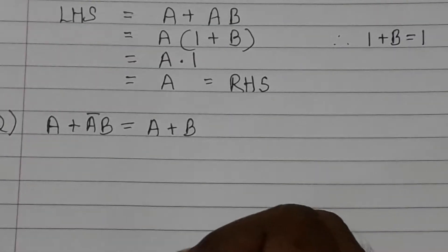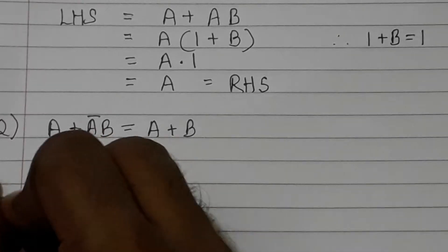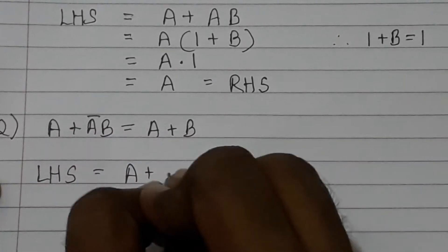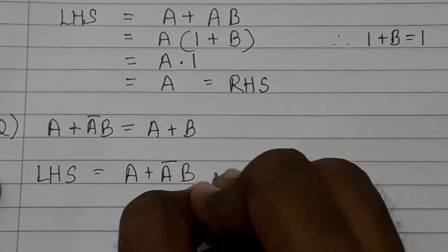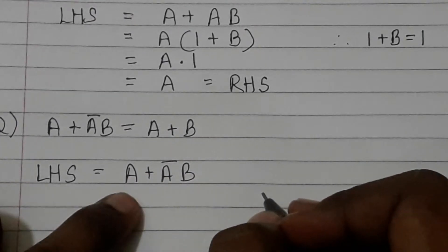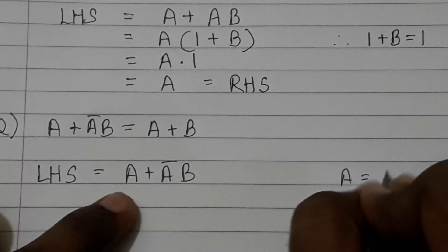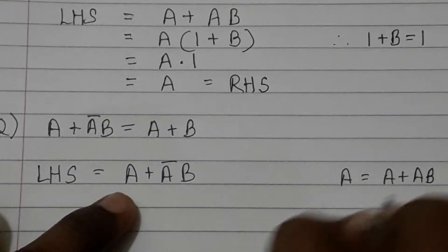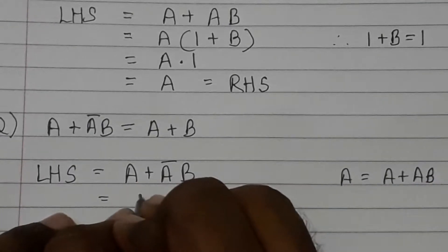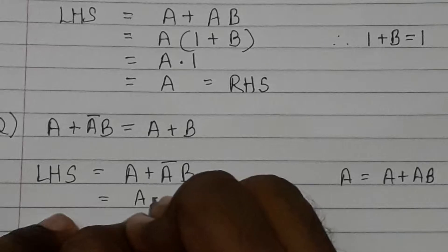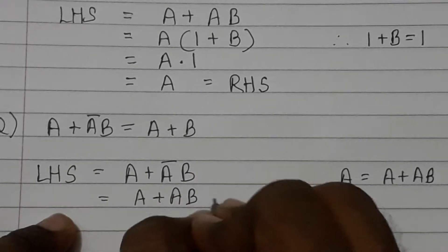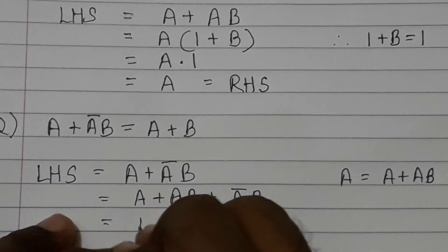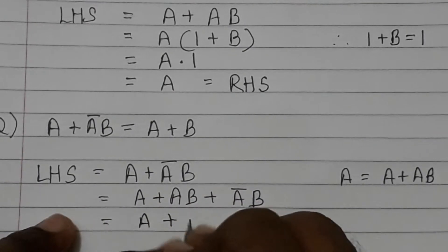Second question. Writing the LHS: A plus A-bar B. Now A can be written as A plus AB, so we get A plus AB plus A-bar B. Taking B common from the last two terms.